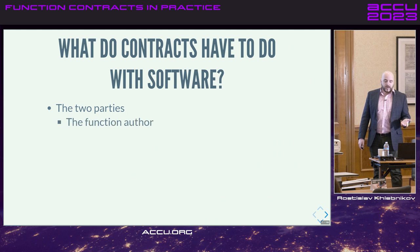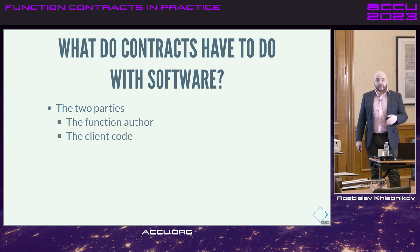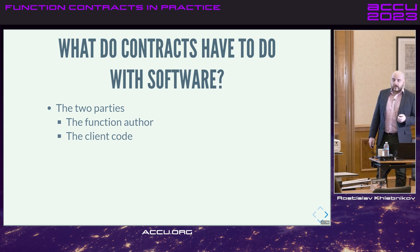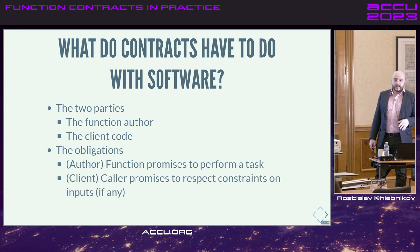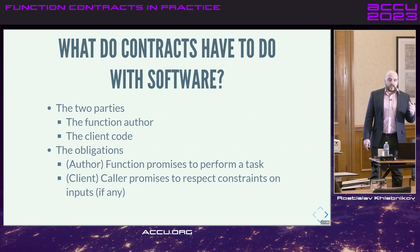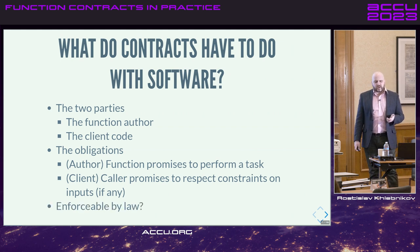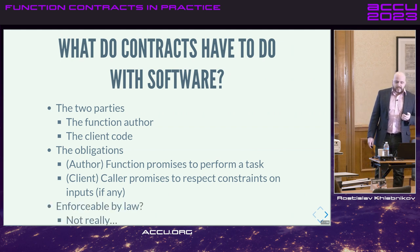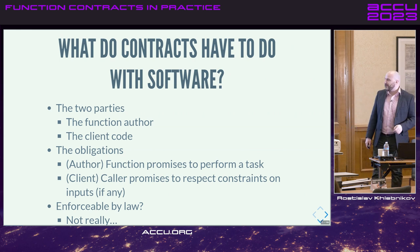In software, there are two parties. One party is the function author. The other party is the client code that is calling the function. The author of the function promises to perform a particular task. But the client, on the other hand, is required to respect any constraints on the inputs, if there are some. Are they enforceable by law? Well, not really — hopefully not — but we'll talk about enforcement a little bit later.